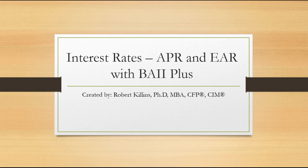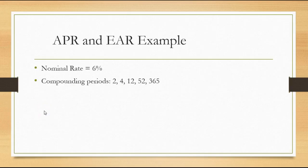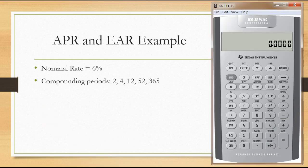Hello everybody, my name is Robert Collins. I'm going to walk you through a quick example of how we can convert interest rates from an annual percentage rate to effective annual rates using the BA II Plus. We have a nominal rate quoted at 6% and we want to find the corresponding effective annual rate for different compounding periods: 2, 4, 12, 52, and 365.